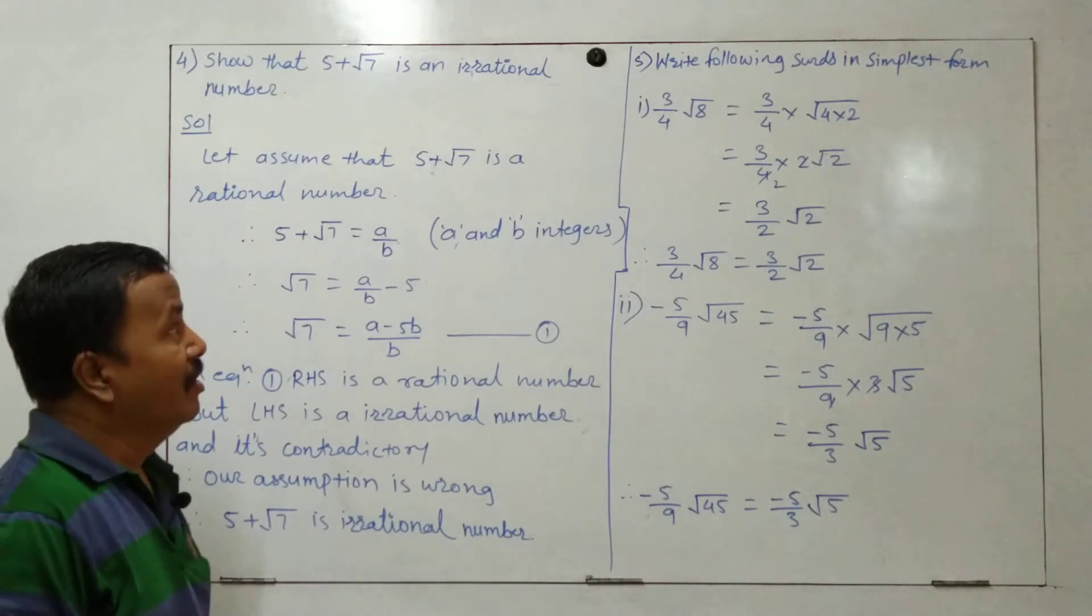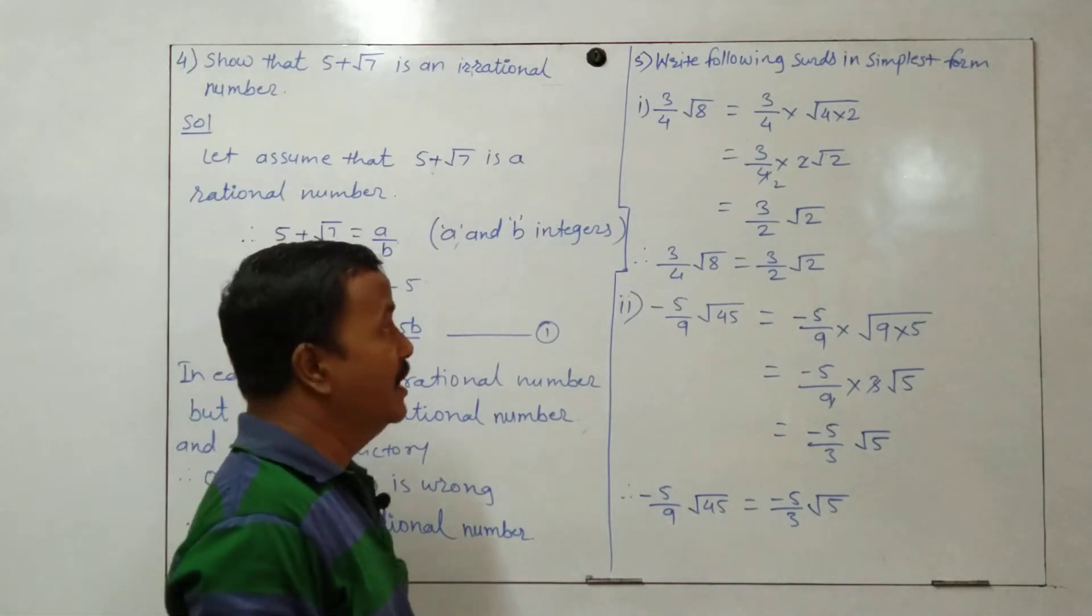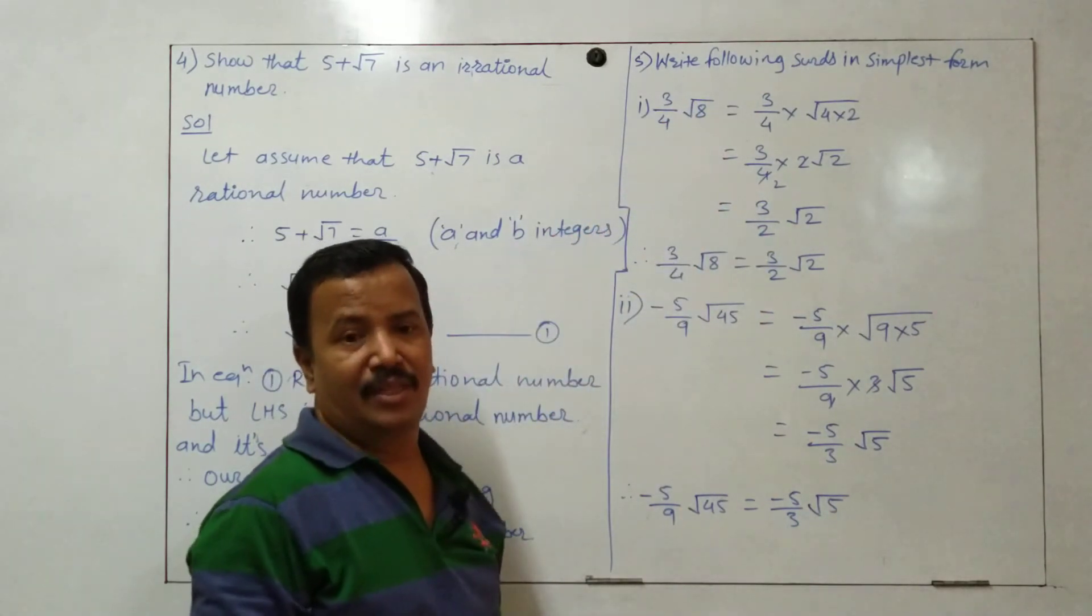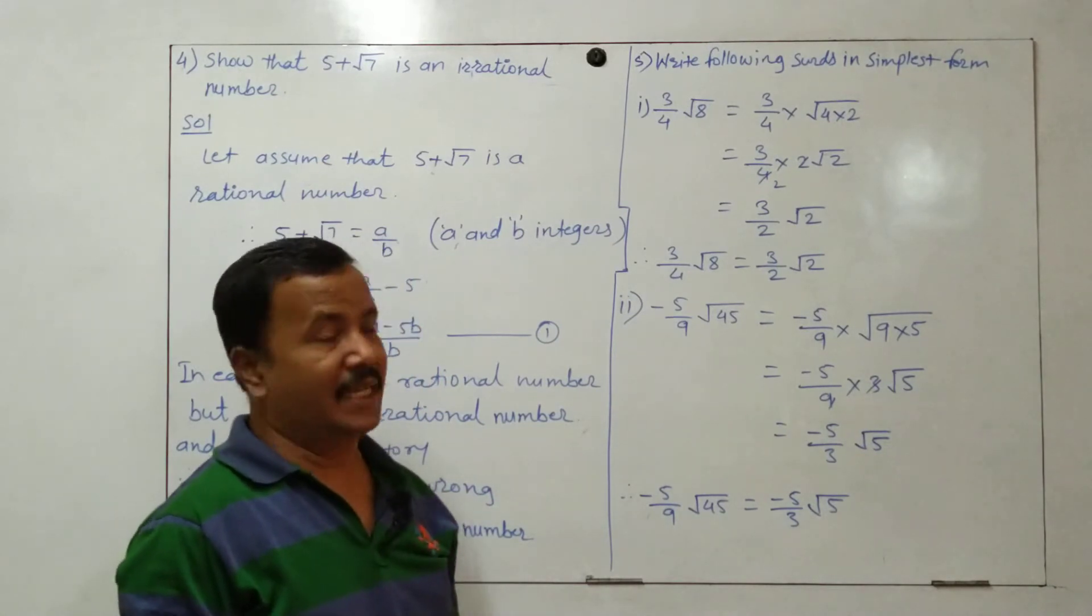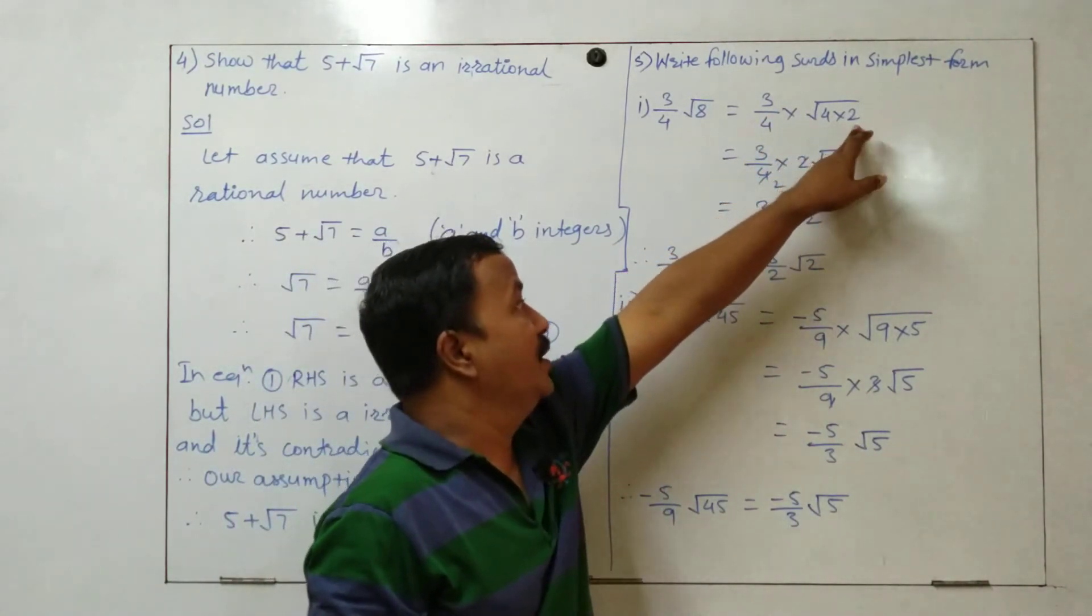Question number 5: Write the following in simplest form. 3 upon 4 root 8. We simplify it as 3 upon 4 into root of 4 into 2.